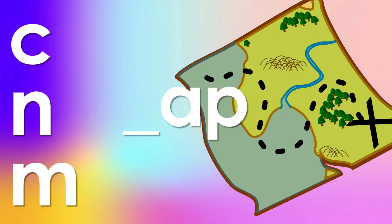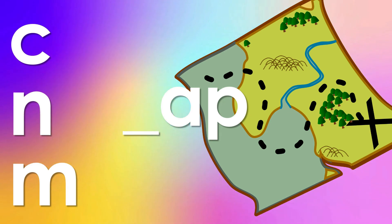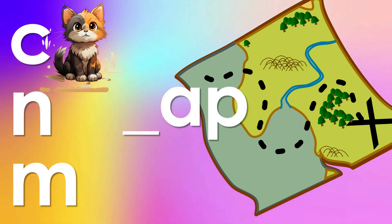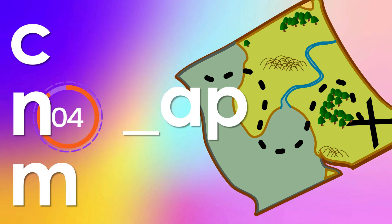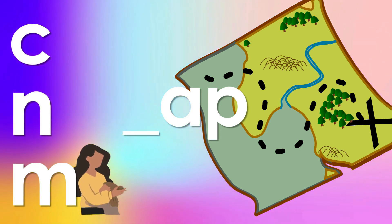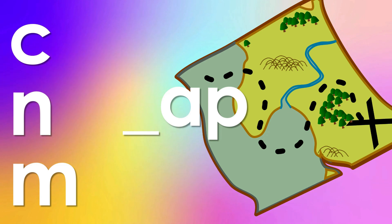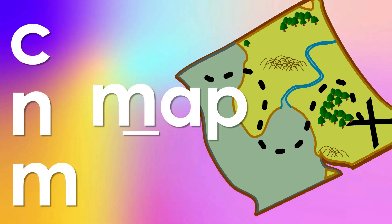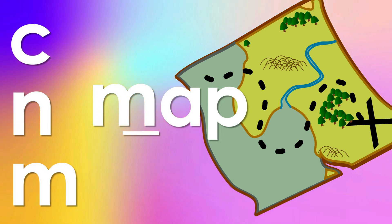Which letter do I add to make the word map? Do I add the letter C like in cat, the letter N like in numbers, or the letter M like in mom? You decide. The letter M makes a mmm sound. When we add the mmm sound to the AP sound we get mmm-AP: map.